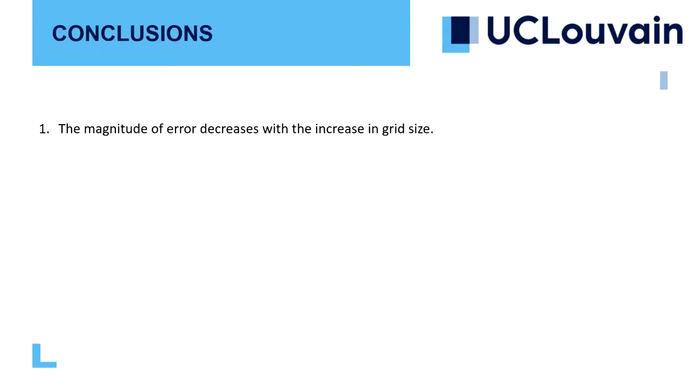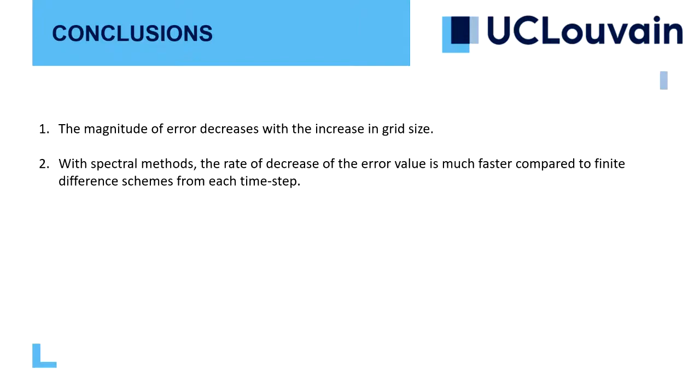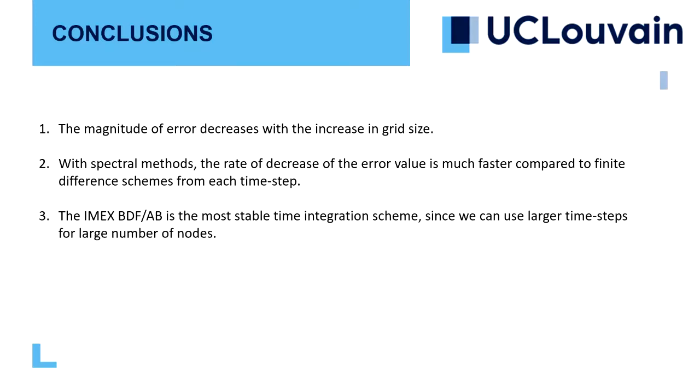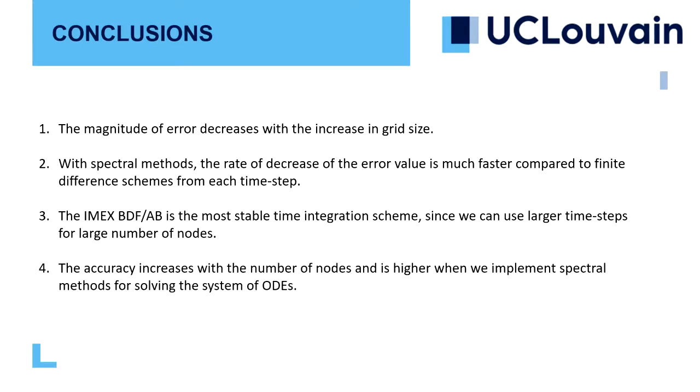For the concluding remarks, we can say that the magnitude of error decreases with the increase in grid size. So the larger number of nodes we have, the less error we have at every time step. With spectral methods, it's much more stable to find the derivative, as we can impose conditions to prevent the floating point overflow. The convergence of error is much faster in spectral methods compared to finite differences. The IMEX BDF is the most stable integration scheme, since we can use larger time steps, and it speeds up the process. The accuracy of the results increases with the number of nodes and is higher when we implement spectral methods for solving a system of ODEs.